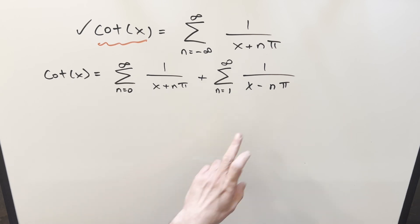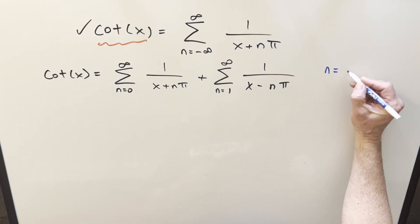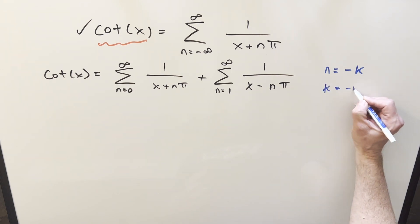And then we're getting close, but again, I want a plus sign here in order to get these to work together. What I'm going to do is a variable change on it. This part's a little weird. So let's do n equals minus k, or you could think about it like k equals minus n.